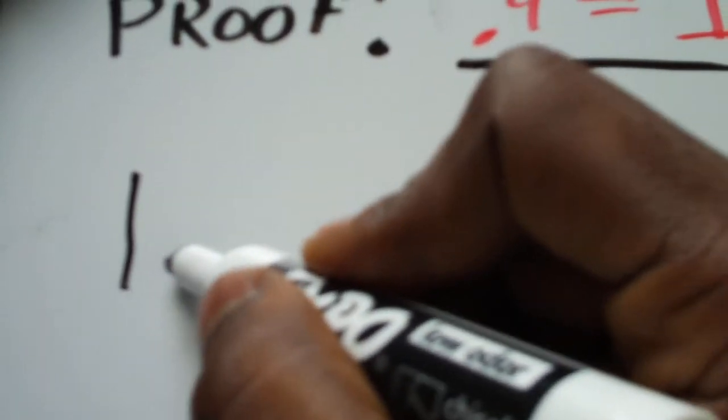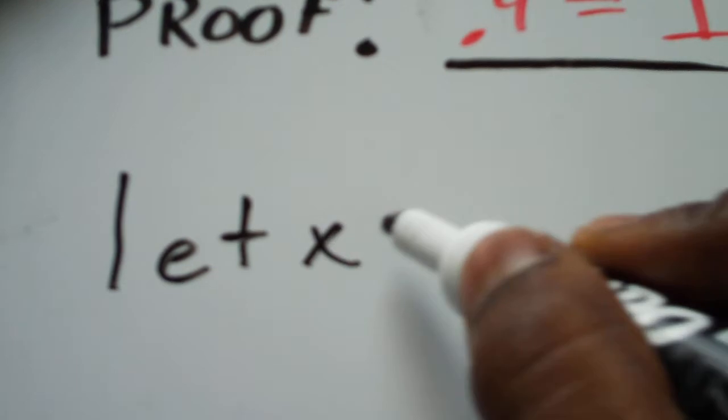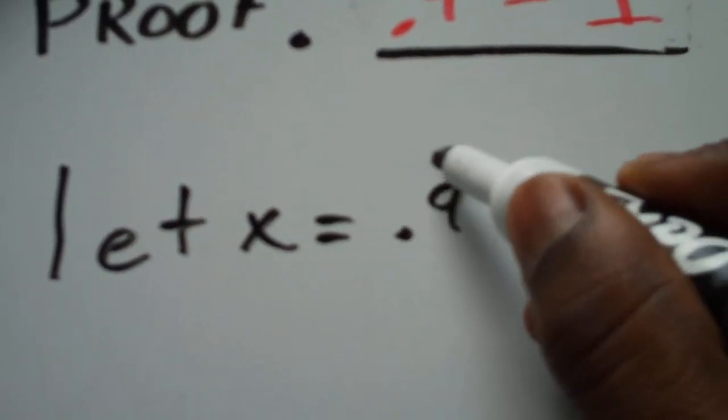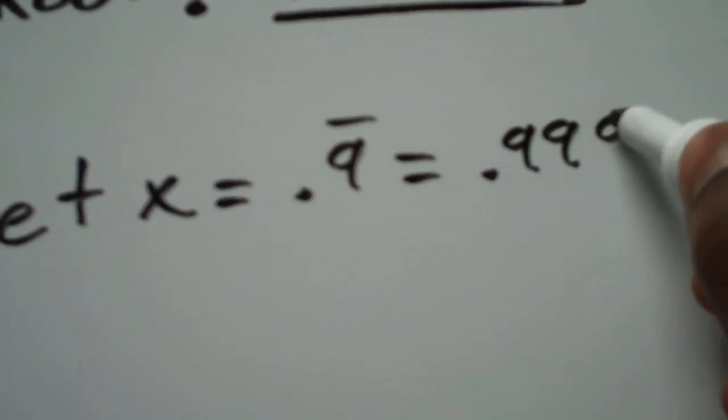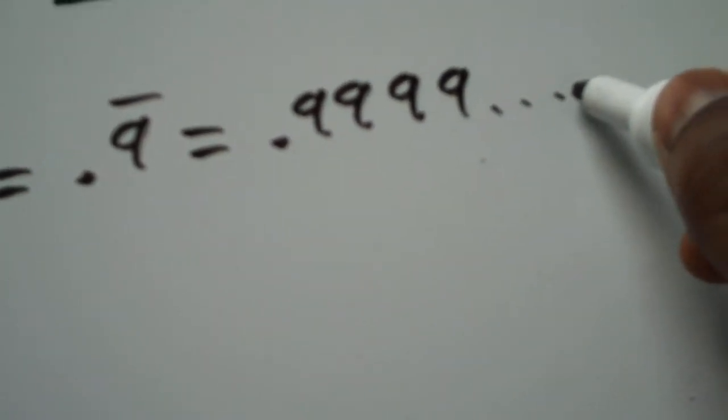So first, we're going to let x equal point nine repeating. That means x is point nine nine nine nine all the way to infinity.